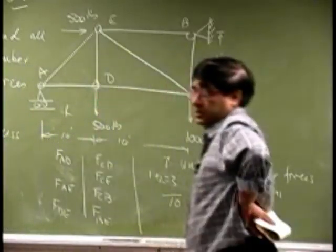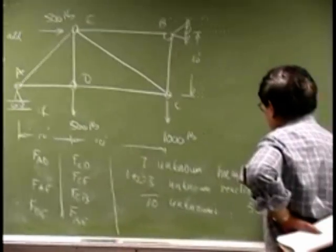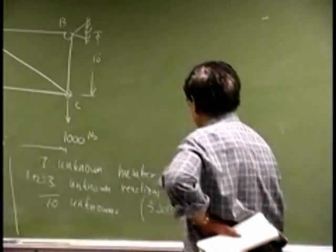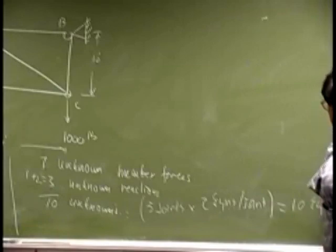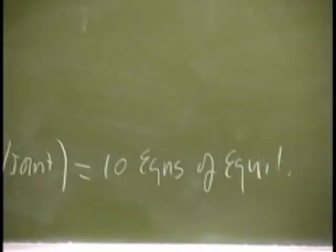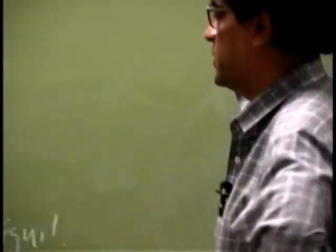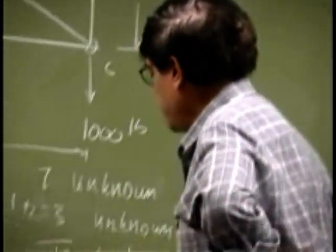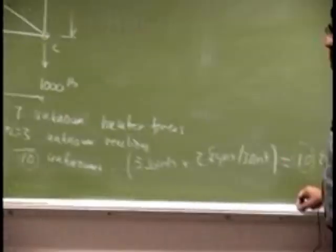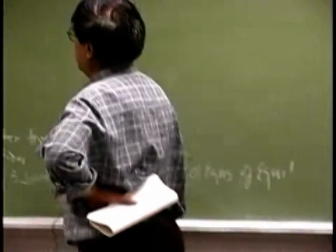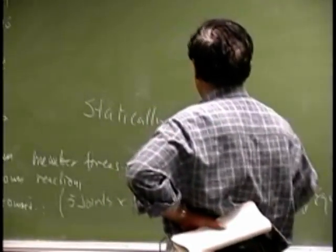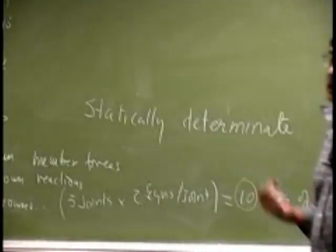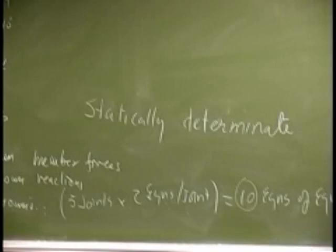You have five joints, so you have five joints. You have ten equations. You have ten equations of equilibrium. So each joint gives you two equations, so the five joints you get ten equations of equilibrium. That means you have number of unknowns, so this number of unknowns match this number of unknowns. So it also means that this problem is statically determinate. That means you have enough equations to solve for all the unknowns in this particular problem.